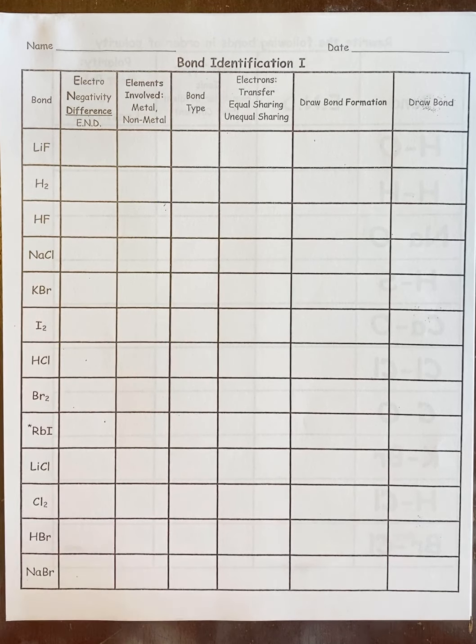First thing: electronegativity difference. For this, you've done it before—you look up the element's electronegativities, subtract, make it a positive number, and write it down. So for Li and F, Li is 1.0, F is 4.0, subtract the two, you get 3.